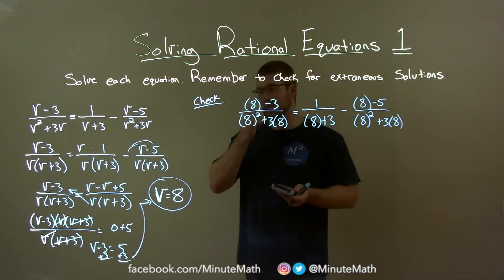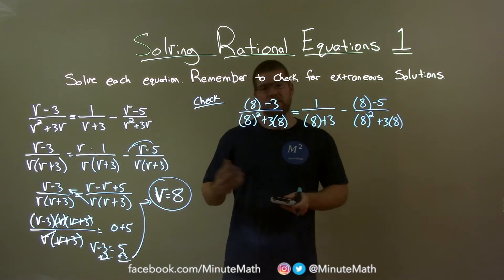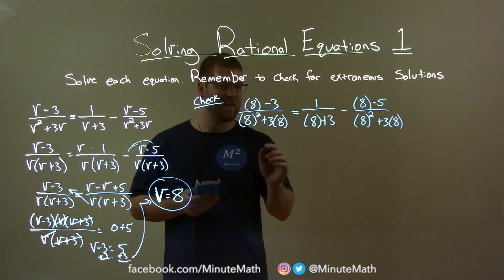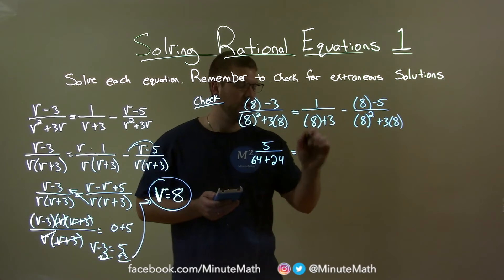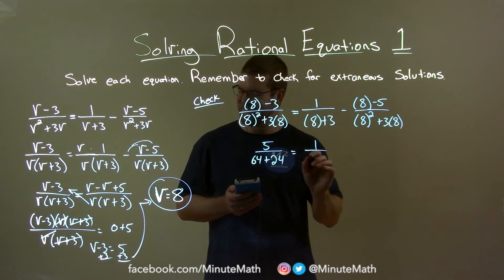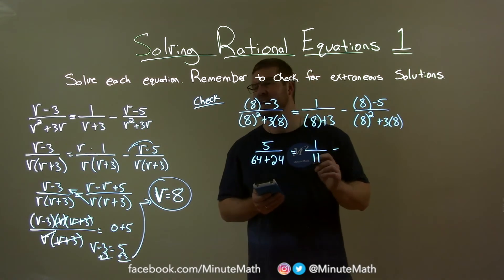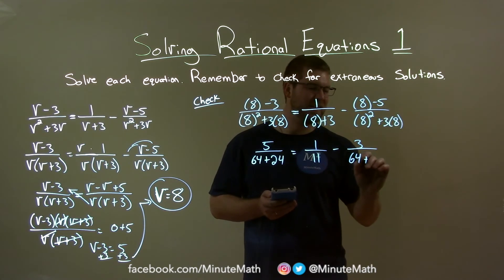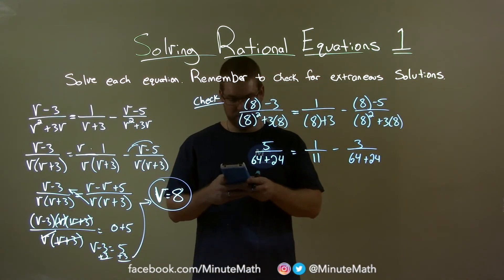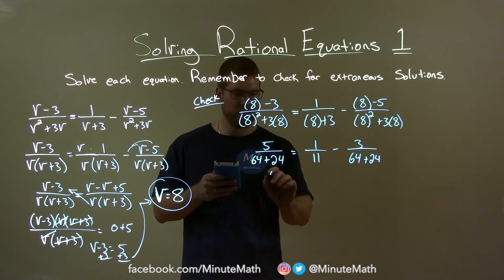Now I always have a calculator handy because I always make simple little mistakes here. Now we want to make sure the left and right-hand side are equal, so we're going to keep them separate, simplify the left and right-hand side individually, and see if they become the same answer. Well, 8 minus 3 is 5 here, right? And then 8 squared is 64 plus 3 times 8, which is 24. We have 1 over 8 plus 3 is 12. Oh no, 11. See, those are simple little mistakes I always make here. Minus 8 minus 5. 8 minus 5 is a 3 over 8 squared is 64 plus 3 times 8 is 24. I'm just going to use the calculator because I'm not going to make a mistake here. 64 plus 24, or let's do 5 divided by, let's do it all at once, 64 plus 24. And that as a fraction comes out to be 5 over 58.